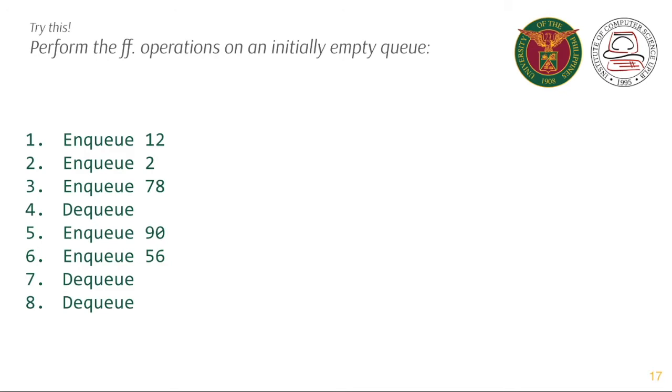Here's another example. We perform the following operations on an initially empty queue: Enqueue 12, 2, and 78, then dequeue. Enqueue 90 and 56, then dequeue. And then finally, another dequeue operation.